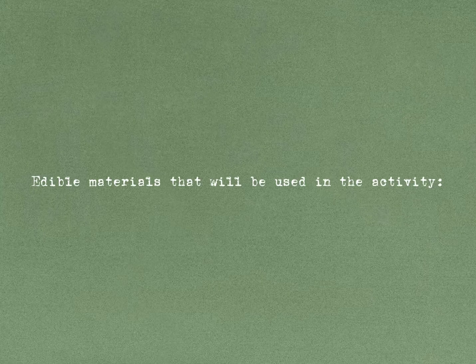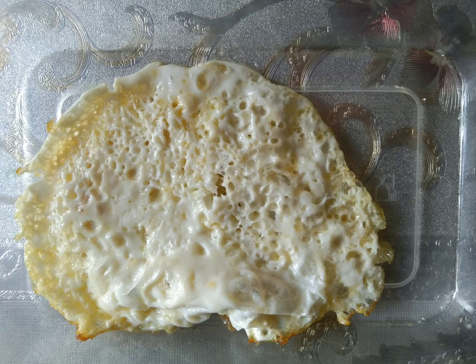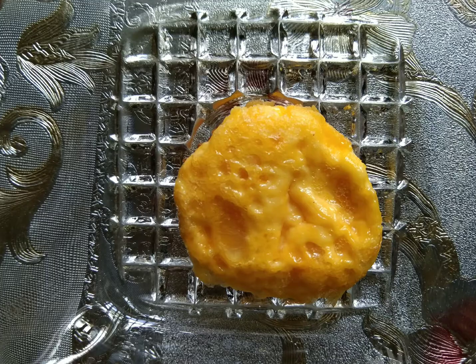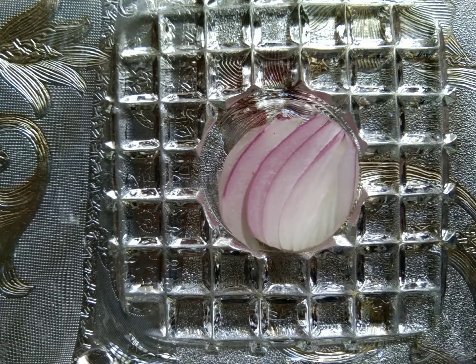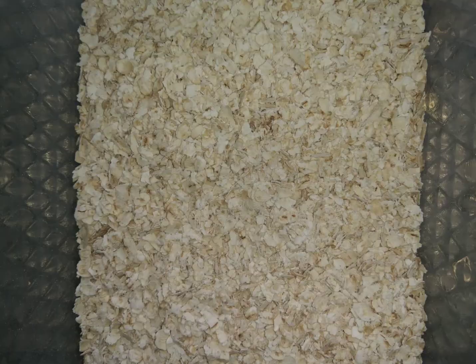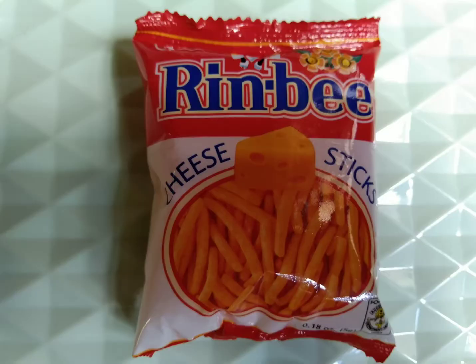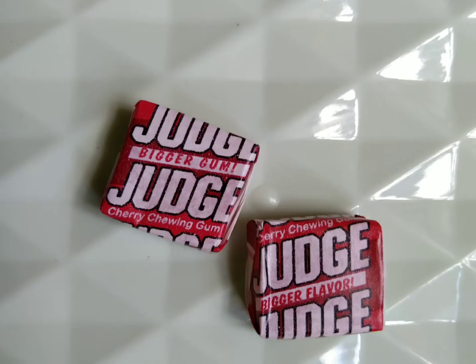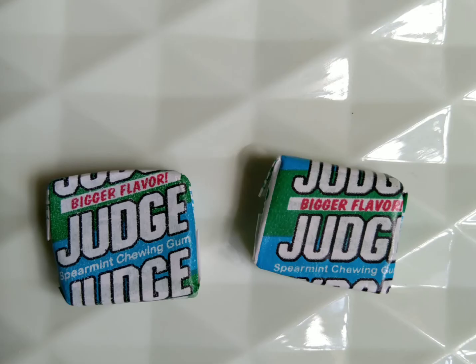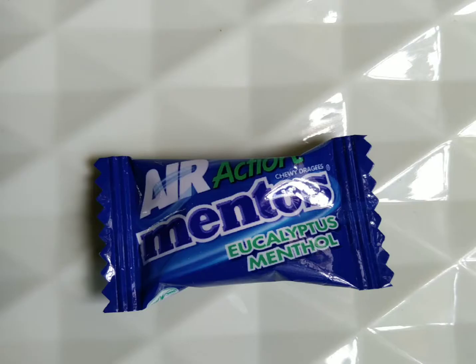The edible materials that I will be using in this activity are gelatin, egg white, egg yolk, onion, oats, green beef, red chewing gum, green chewing gum, and mentos.